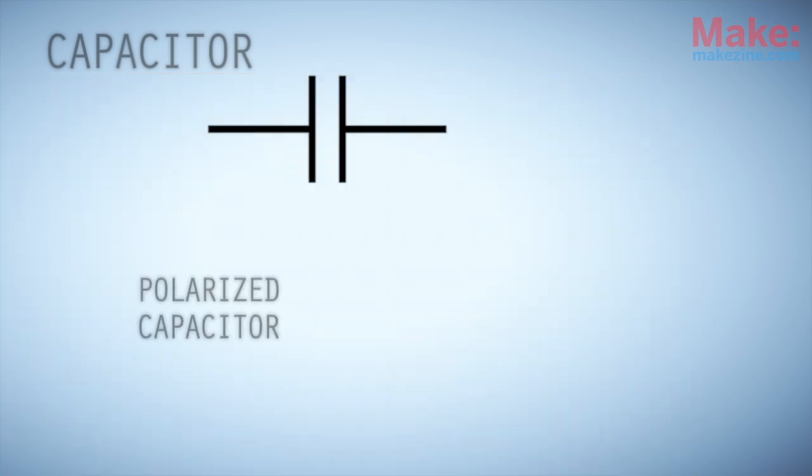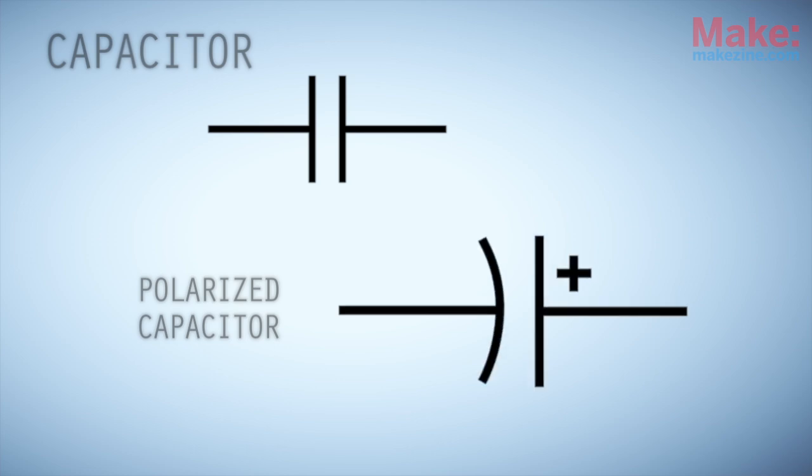Polarized capacitors use a plus sign to indicate their positive side, and a curved line to indicate the negative.